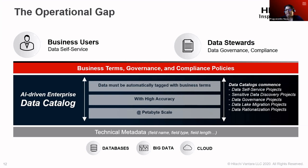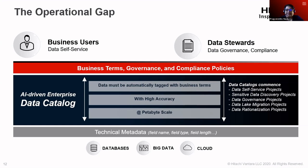As your data becomes more refined and easily accessible — more federated and democratized — your data consumers can focus on more specialized problems rather than spending time looking for data. This enables data governance projects, data self-service projects, and data migration projects. This leads to crowdsourced curation: discovery and tagging improve, collaboration is better, and users have access to more of the organization's data, enabling better use cases.